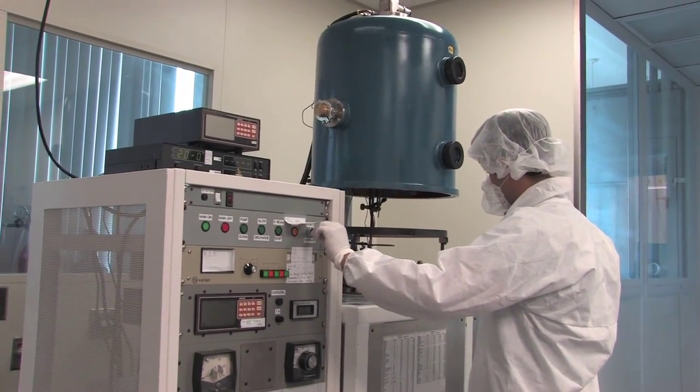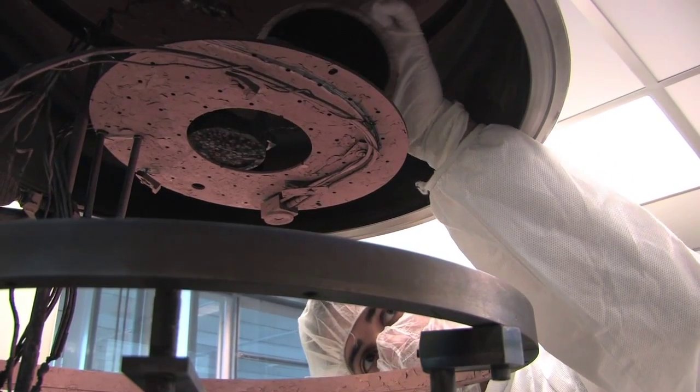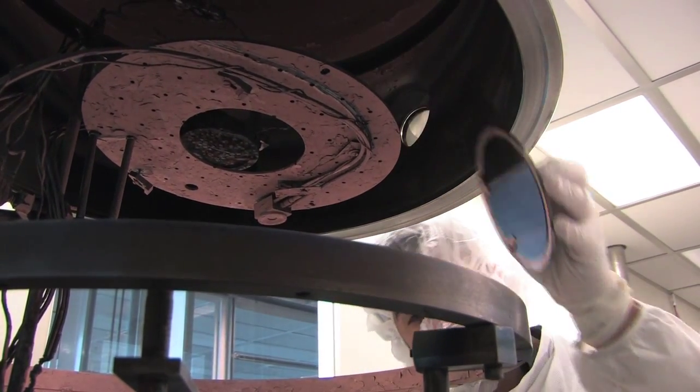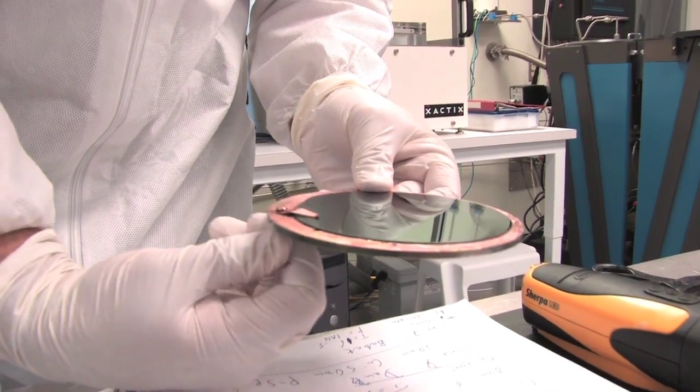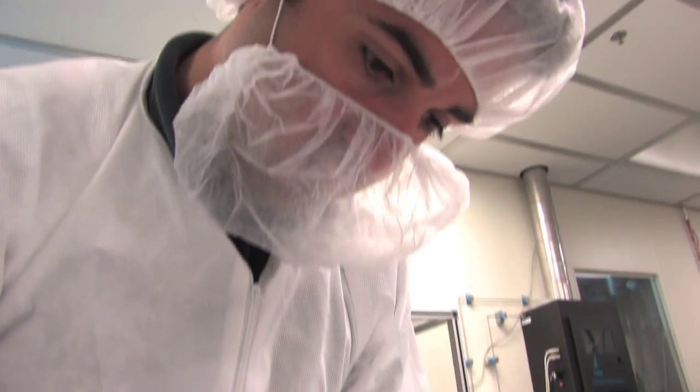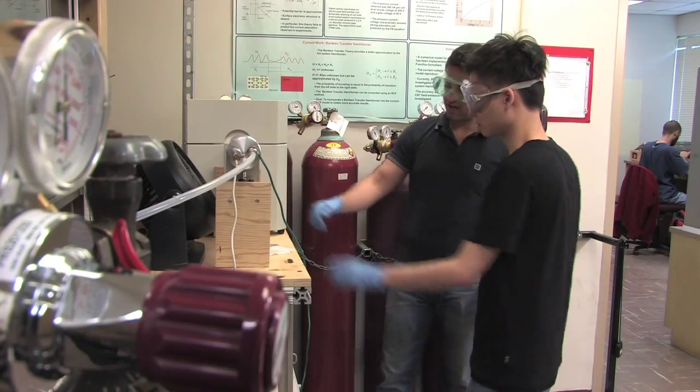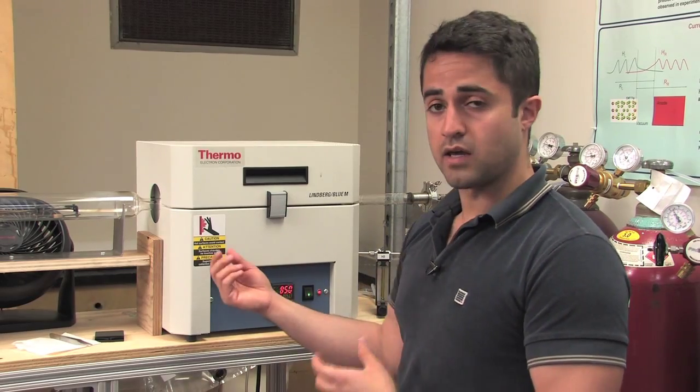We are in a nanofabrication clean room preparing a silicon wafer for carbon nanotube growth. We bring the wafer back into our lab and cut it into small pieces. We take these pieces and place them in a chemical vapor deposition system, which is a high-temperature process for growing carbon nanotubes.